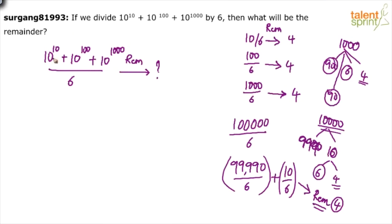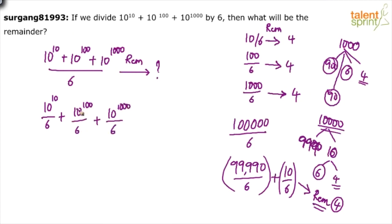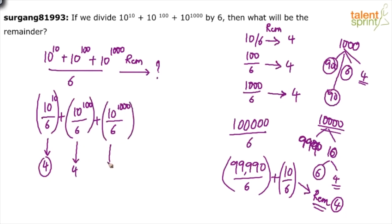10 power 10 will have 10 zeros. We can split the expression as: (10^10 ÷ 6) + (10^100 ÷ 6) + (10^1000 ÷ 6). The remainder from 10^10 divided by 6 will be 4, the remainder from 10^100 divided by 6 will be 4, and the remainder from 10^1000 divided by 6 will also be 4.